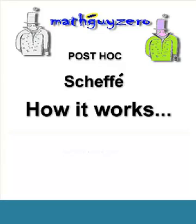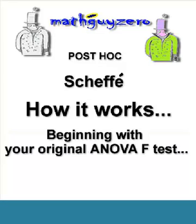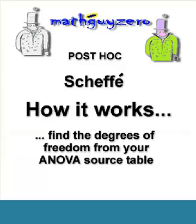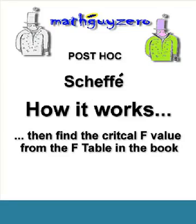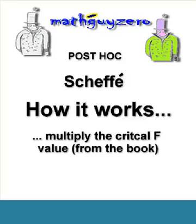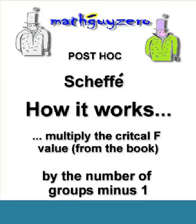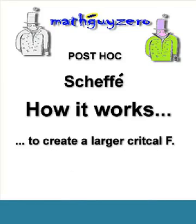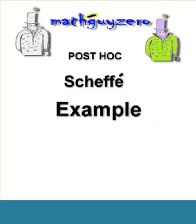Here's how it works. You start with your original F ratio from an ANOVA. You find the degrees of freedom from your ANOVA source table, then you find the critical F value in a book from your ANOVA table. You multiply the critical F value from that book times the number of groups you have minus 1. That way you're going to get a much bigger critical F value.